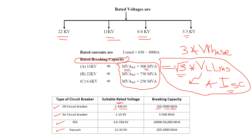Air circuit breakers operate from 1 to 15 kV — medium voltage only — with breaking capacities from 5 to 500 MVA. SF6 circuit breakers operate from 3.6 to 760 kV, covering medium, high, and extra-high voltage, with very high breaking capacities of 10,000 to 50,000 MVA. Vacuum circuit breakers cover 11 to 33 kV with 250 to 2000 MVA.